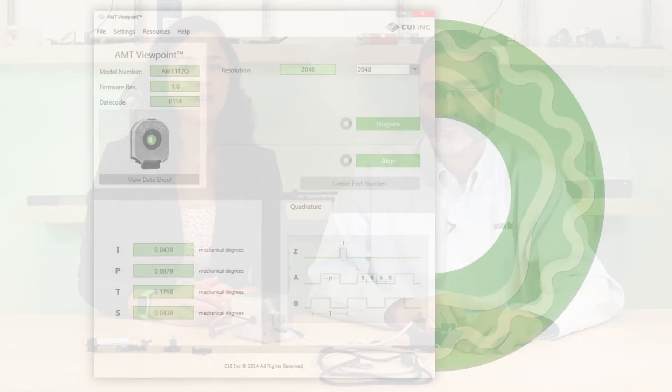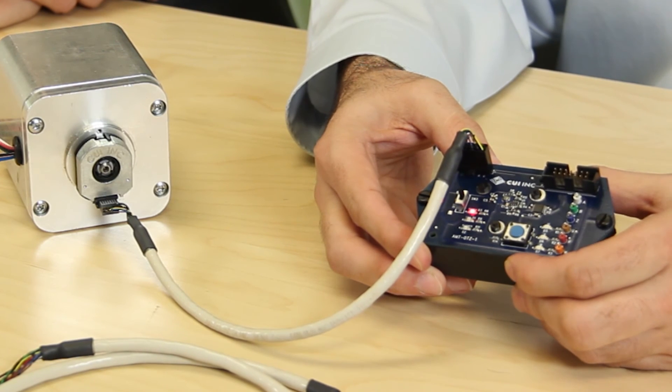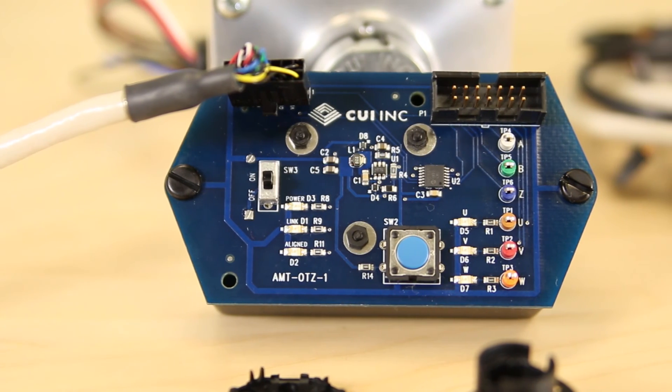So, installing and aligning CUI's AMT31 commutation encoder series doesn't need to slow assembly. Thanks to its one-touch zero module and intelligent AMT Viewpoint GUI, the AMT series allows for high visibility and control.